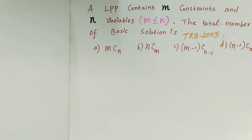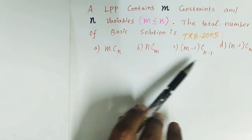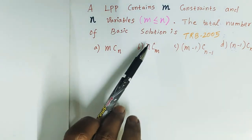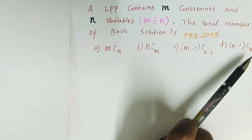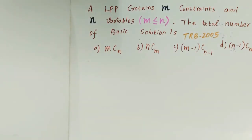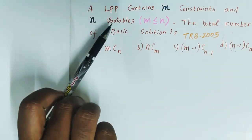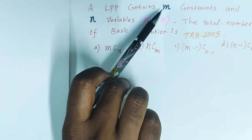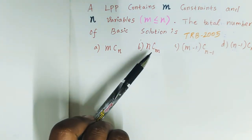Applying the idea, when we substitute n and m, the options available are nCm or n-1Cm. The answer is nCm. The number of variables is n, the number of constraints is m, and the total number of basic solutions is nCm.